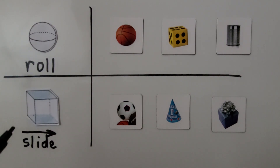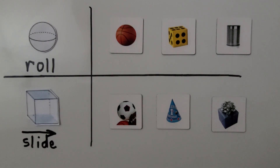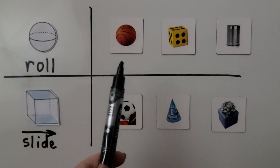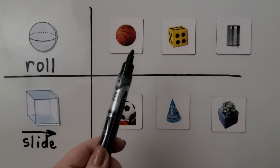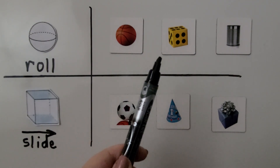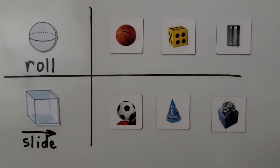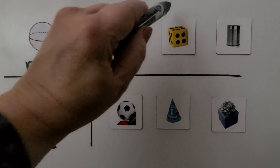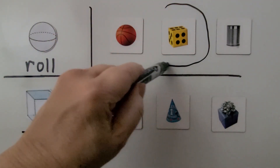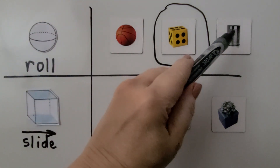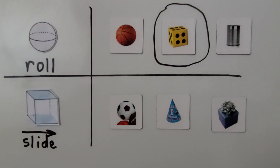So now we know a sphere can roll, and we know a cube can slide on a flat surface. Which object here cannot roll: a basketball, a gaming number cube, or a can? Circle the one that cannot roll. If you said the cube, you're right. The ball can roll, and we can put the can on its side and roll it.